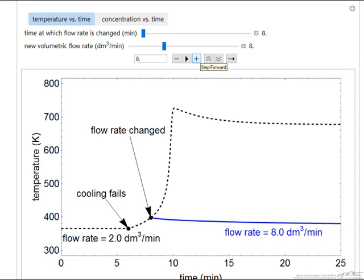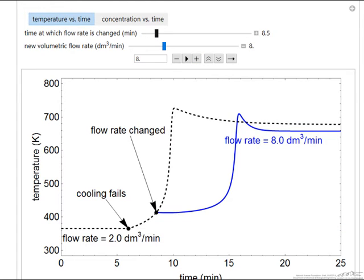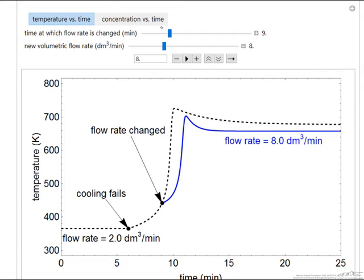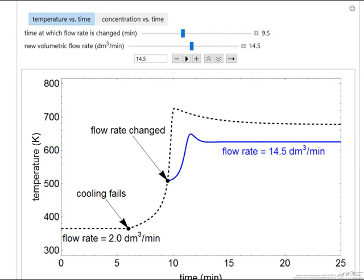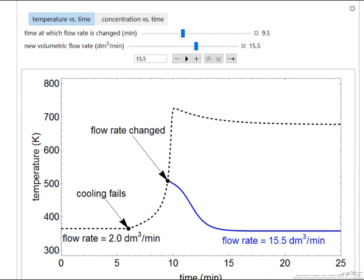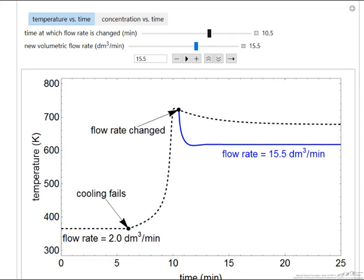If we look at the effect of the time at which we make this decision, if we wait longer—say 9 minutes—then we have to go to a much higher flow rate. If we wait a lot longer, we keep increasing the flow rate and we're able to compensate. Of course, if we wait when it's already at the maximum temperature, it's not accomplishing our goal of preventing the temperature overshoot.